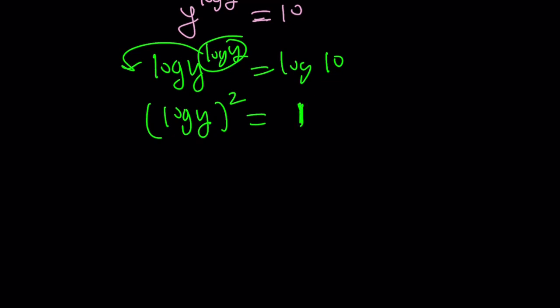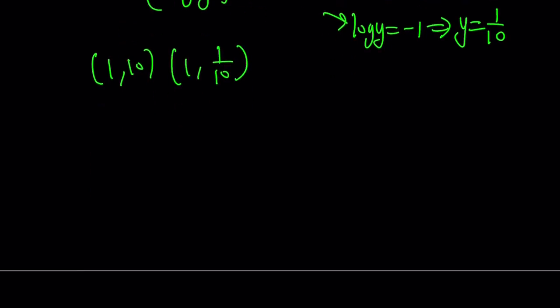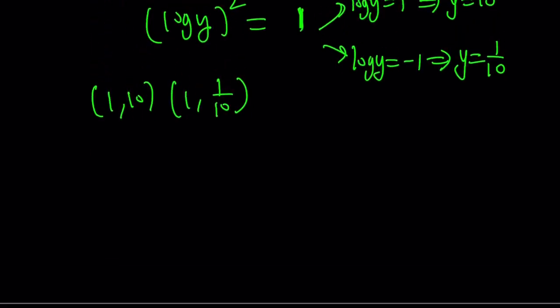So this gives us two results. Log y equals 1 and log y equals negative 1. But we have said x and y have to be positive. It's okay. X and y are positive, but log y can be negative. This just means y equals 10, and this just means y equals 1 tenth. So that means when x equals 1, y can be 10 or 1 tenth. And since they're interchangeable, the same thing is true for y and x, or x and y.